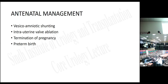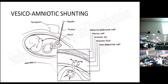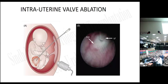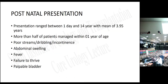In vesicoamniotic shunting, a double-J stent is placed — one end in the fetal bladder and the other in the amniotic cavity — to drain urine from the fetal bladder into the amniotic cavity. In in-utero valve ablation, a fetal cystoscope of 1 to 2 mm is passed through the maternal abdomen, through the uterus, and into the fetal bladder to visualize the bladder neck directly and ablate the valve.